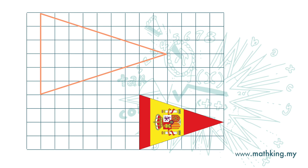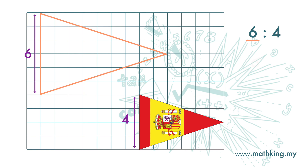One more example. Here, the length of this side of the drawing is 6 units, while the length of the side of the actual flag is 4 units. Next, we need to make the number in front become 1. We do that by dividing 6 by 6, and we do the same for the number at the back. 4 divided by 6 is 2 over 3, and we get 1 to 2 over 3.